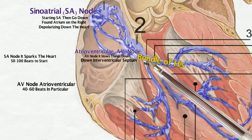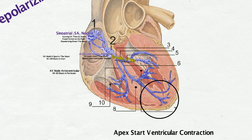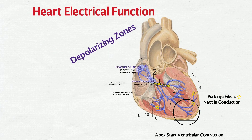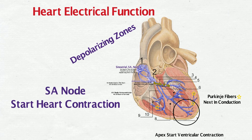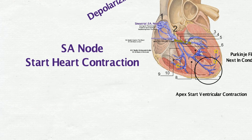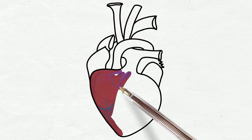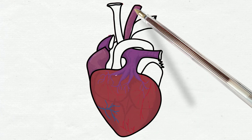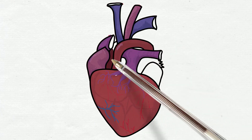AV node drives ventricular, 40 to 60 beats in particular, down interventricular septum — Bundle branches next in conduction. Apex starts ventricular contraction, Purkinje fibers next in conduction — heart electrical function. As they fire, start heart contraction. Top down right to left, blood flow inside your chest — atrium in the ventricles, pumping blood through your vessels.